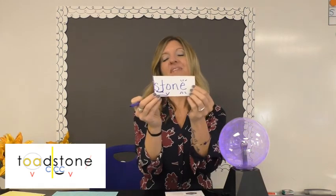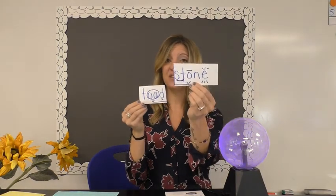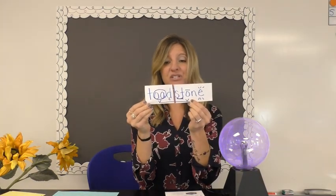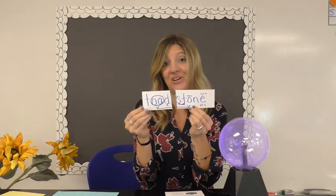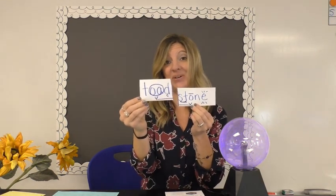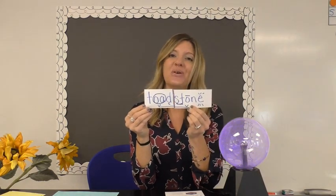My first syllable is 'toad' — we know it says 'toad' because OA always says long O. The next syllable is 'stone' — magic E makes my previous vowel long. So this word is 'toadstone.' It's actually a compound word with 'toad' and 'stone,' and toadstone is a kind of rock.